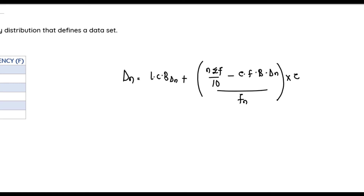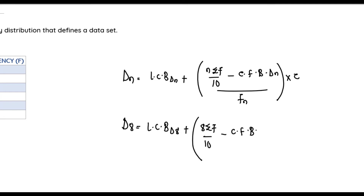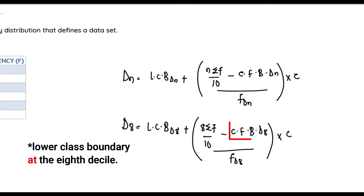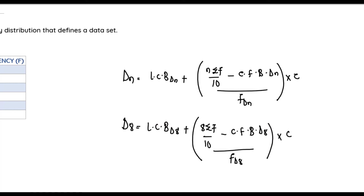For the 8th decile specifically, D8 = LCB_{d8} + [(8 × Σf / 10) − CFB_{d8}] / f_{d8} × c. So LCB_{d8} is the lower class boundary before the 8th decile, CFB_{d8} is the cumulative frequency before the 8th decile, f_{d8} is the frequency at the 8th decile, and c is the class interval.